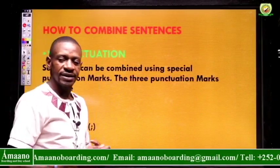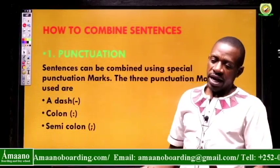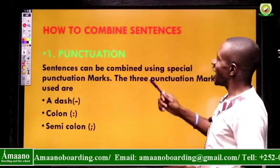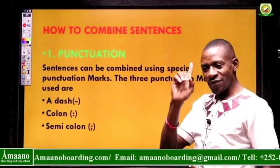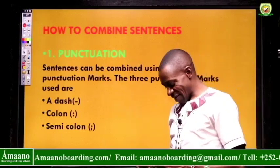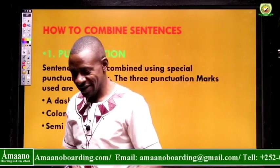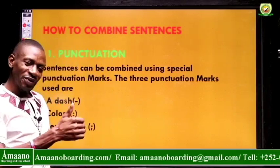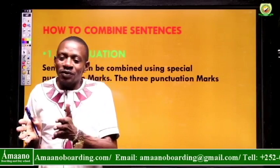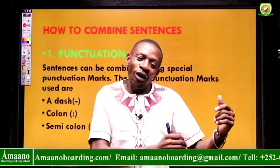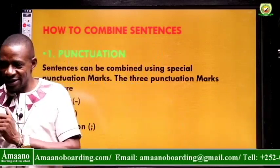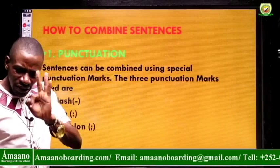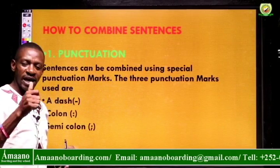Now that we know what we are talking about, let us look at how we combine sentences in English. The first way of combining sentences is using punctuation. We know what punctuation marks are in English, and those punctuation marks are the ones we can use to combine sentences, so that a sentence moves from being a simple sentence into a compound or complex sentence. Sentences can be combined using special punctuation marks, and there are mainly three: a dash, a colon, and a semicolon.